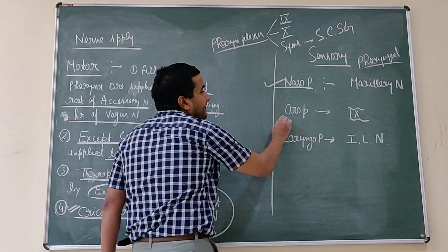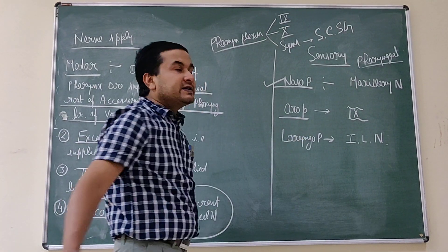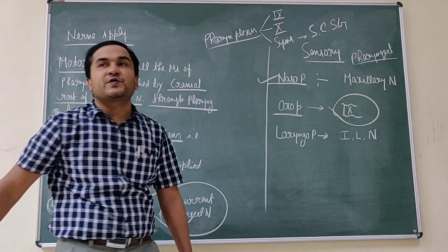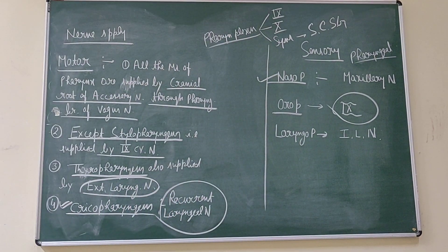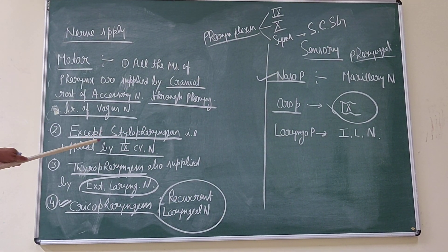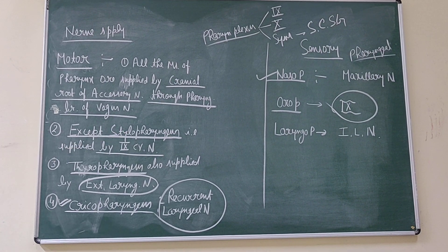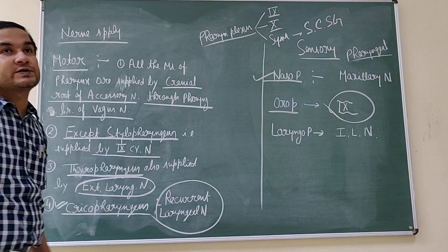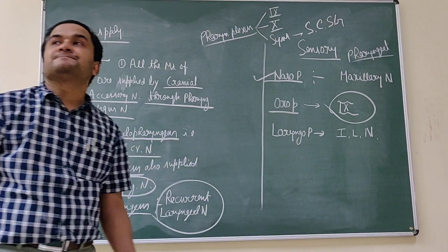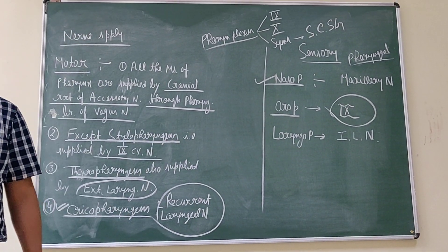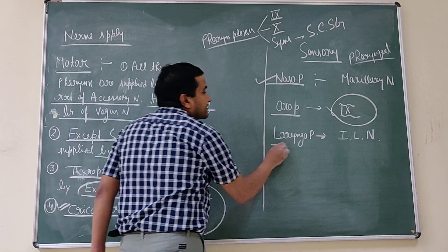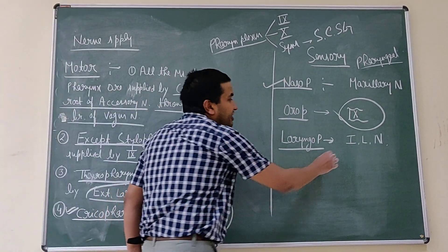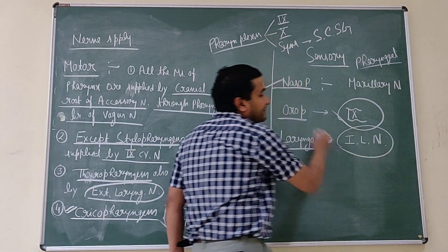The oropharynx is supplied by the branches of the glossopharyngeal nerve. The glossopharyngeal nerve is a mixed nerve — its motor component only supplies stylopharyngeus, while more prominently its sensory component supplies the mucosa of the oropharynx. For the laryngopharynx, the sensory supply to its mucosa is by the internal laryngeal nerve.